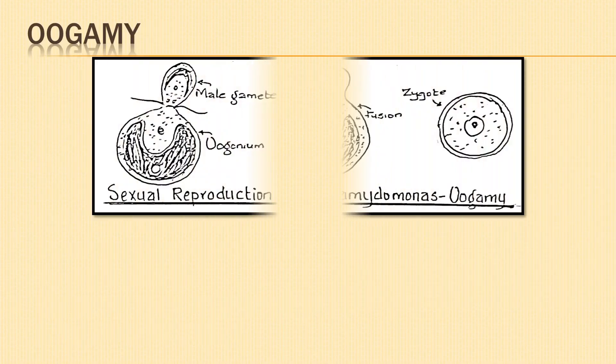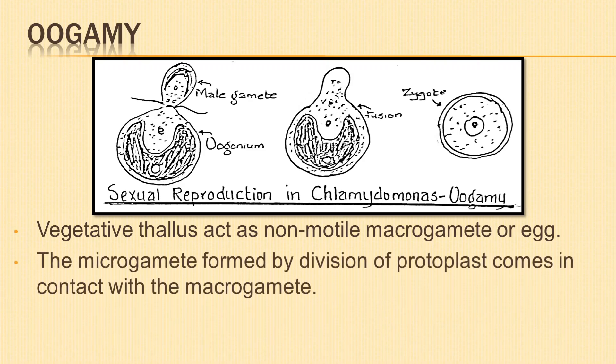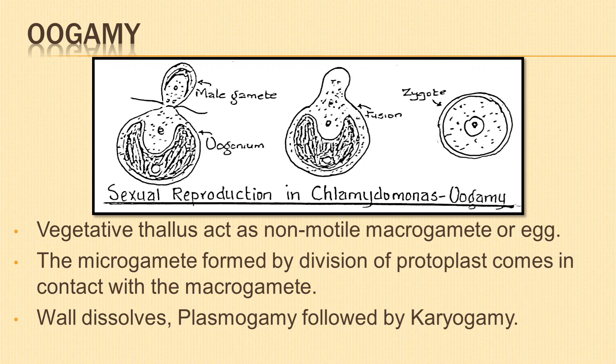In oogamy, the vegetative thallus which functions as the female gamete withdraws its flagella and acts as a non-motile macrogamete or egg. The microgametes formed by division of the protoplast reach the female and come in contact by the anterior end. The wall at the point of contact dissolves. Plasmogamy takes place followed by karyogamy. The zygote formed develops a thick wall around itself and forms a zygospore.